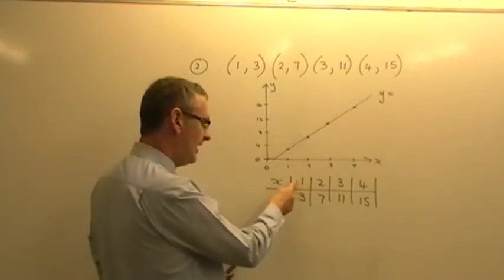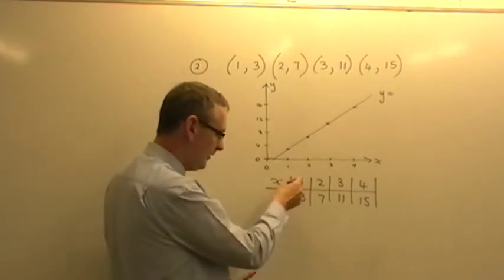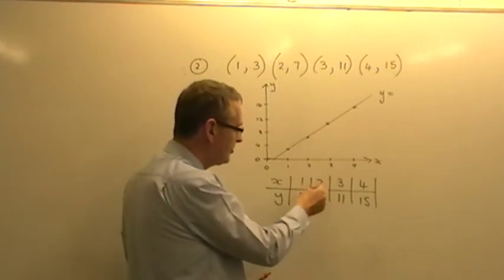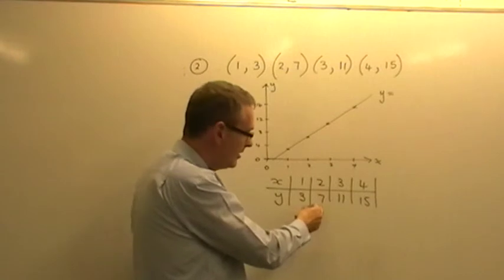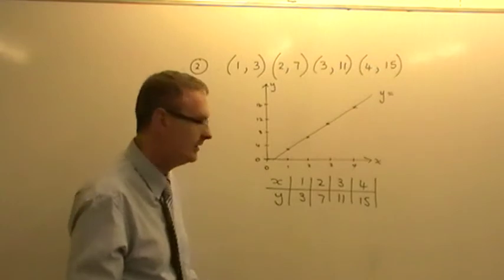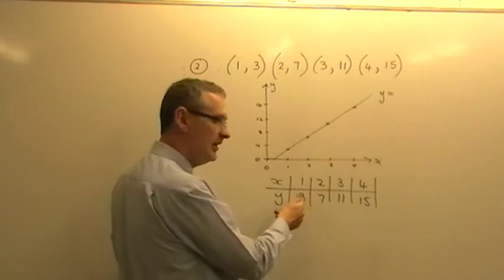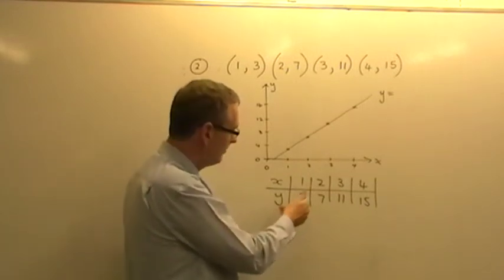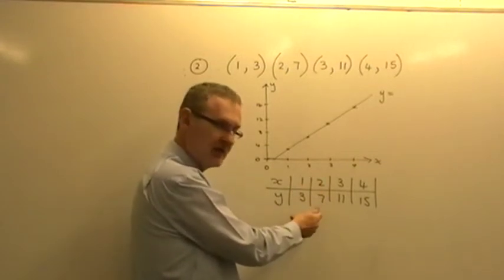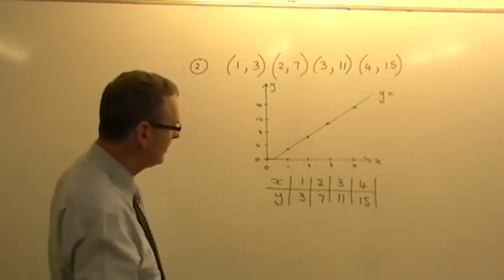Now, in the last example, we had a 1 and a 3 in the last example, but it was a plus 2 pattern, which is fine. 1 plus 2 is 3. But, plus 2 to that, 2 plus 2 does not give 7. So it's not a plus 2 pattern, because it must work for all points on the line. So we look for an alternative. You might say, well, to go from 1 to 3, you multiply by 3. But, if you take the 2 and you multiply that by 3, we don't get 7. We get 6. So it's not a multiply by 3 pattern.